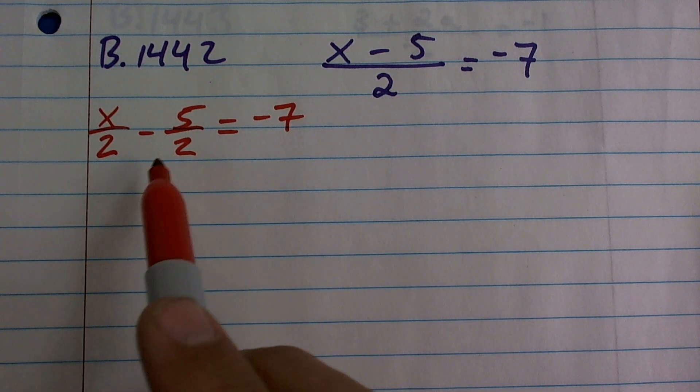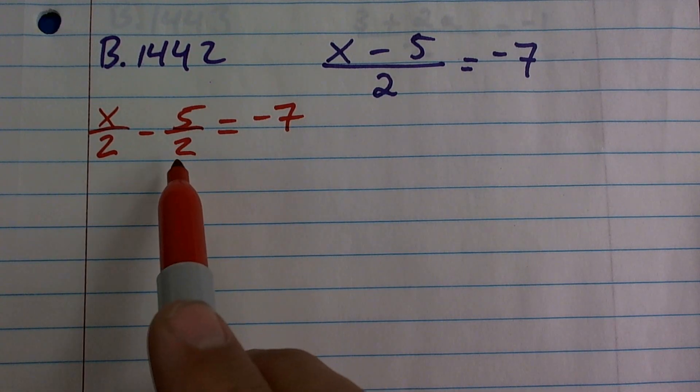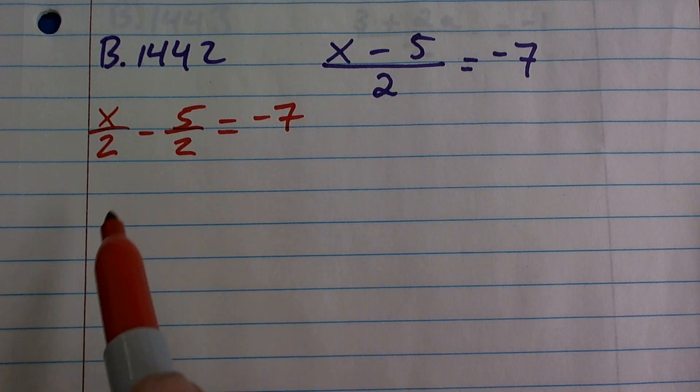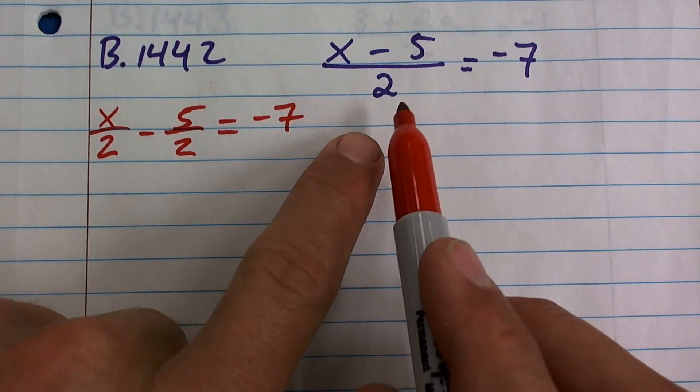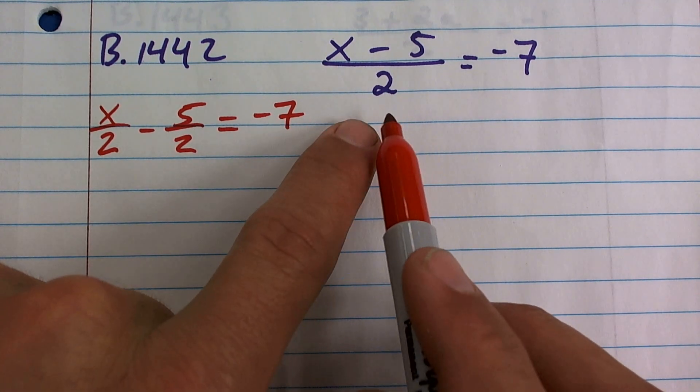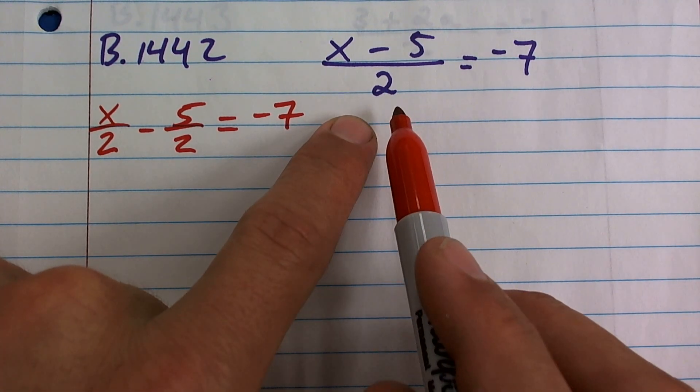When you have multiple fractions like this, even if they're the same denominator or different denominators, especially when they're different denominators, we like to get rid of the fraction. That just helps us out. Here's the exact same thing. How can we get rid of this fraction? How can I undo dividing by two?